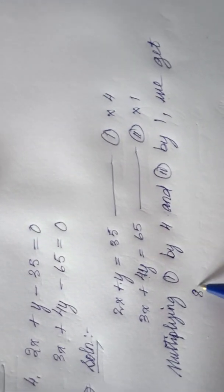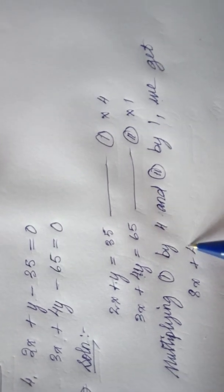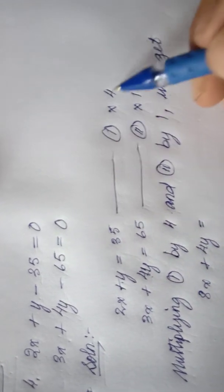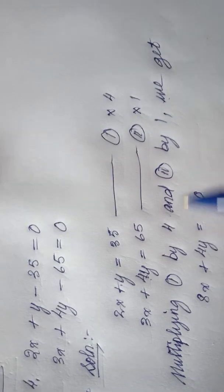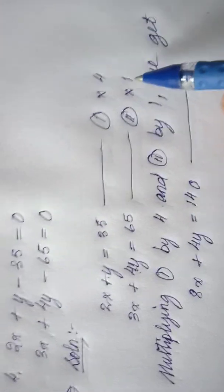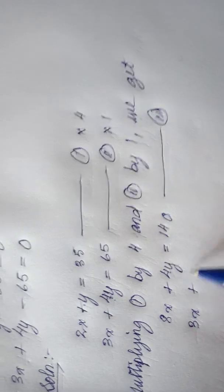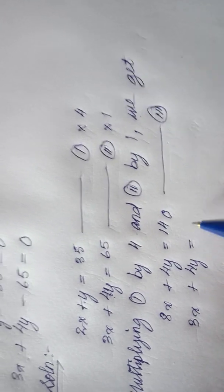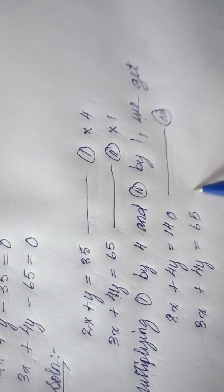If I multiply equation 1 by 4, I will be having 8x plus 4y equal to 140. This will be our equation 3. And as equation 2 will be multiplied by 1, I don't have to make any changes. It will be the same as equation 2. This will be equation 4. As you can see now, we have similar y terms.